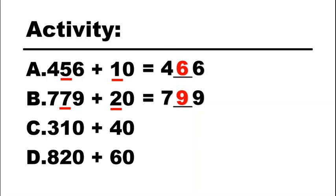Let's have letter C: 310 plus 40. Look at your tens place digit — that is one and four. We need to add them: one plus four is five. Copy your hundreds and ones digit, and the answer is 350.